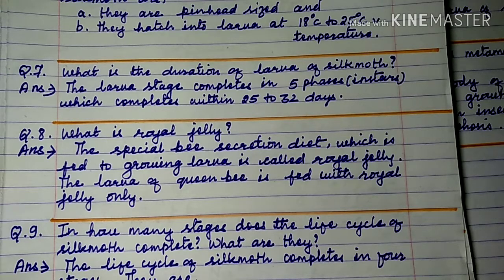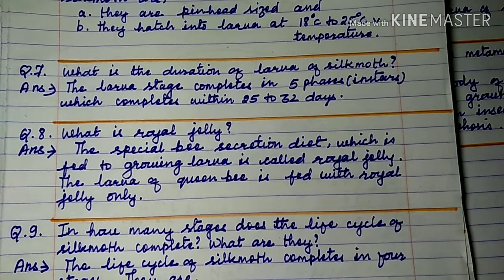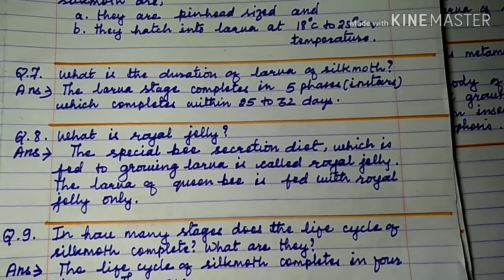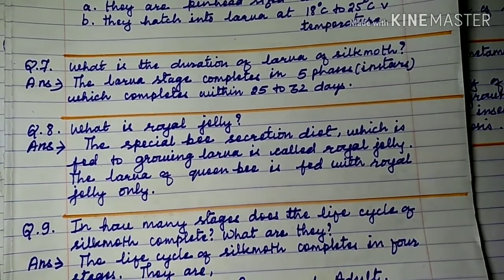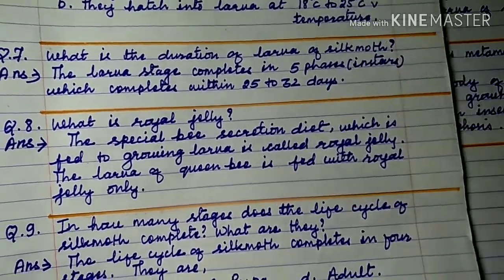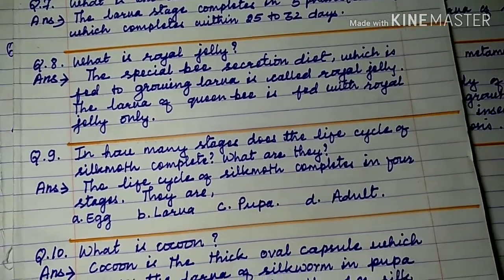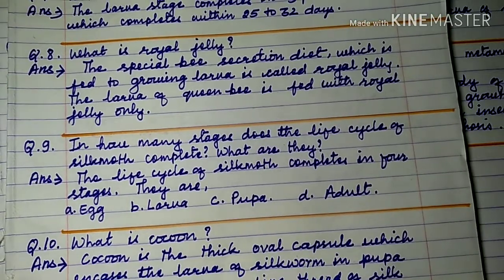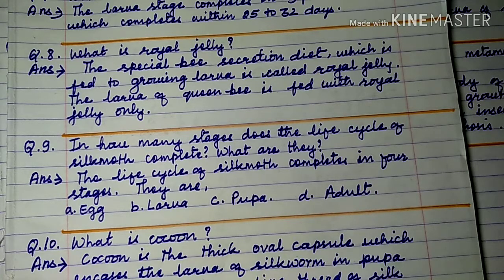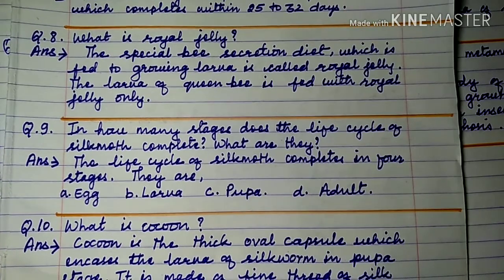Question number 9: In how many stages does the life cycle of silk moth complete? What are they? The life cycle of silk moth completes in four stages: they are egg, larvae, pupae, and adult.